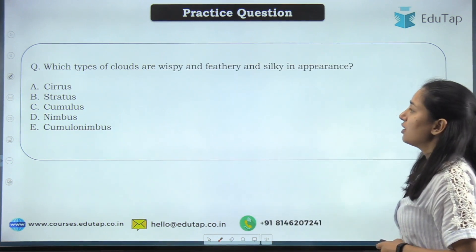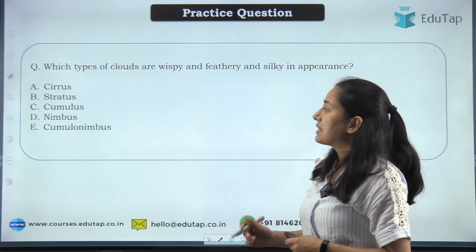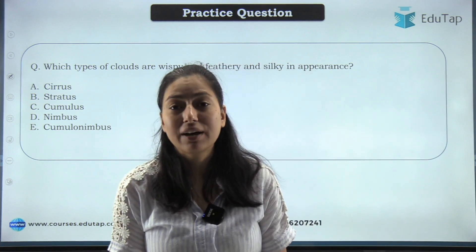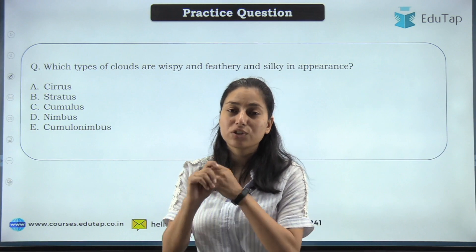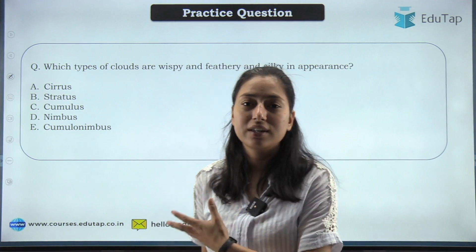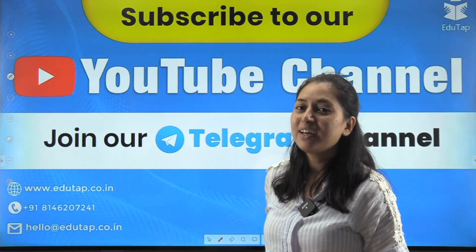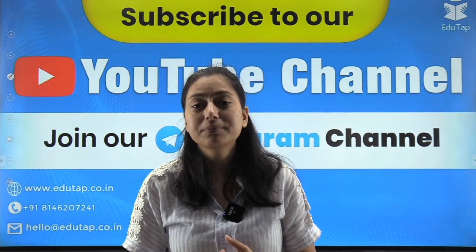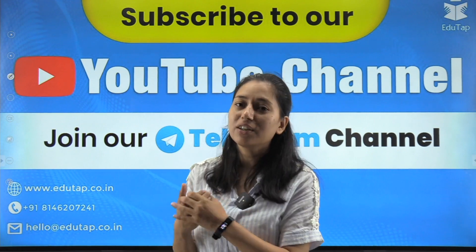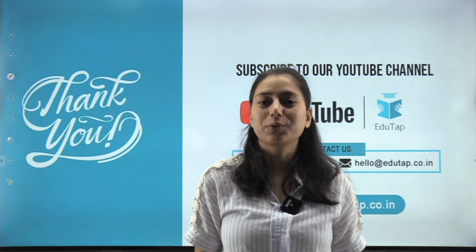Next question for you to attempt: which type of cloud is wispy, feathery, and silky in appearance? Options: cirrus, stratus, cumulus, nimbus, cumulonimbus. Attempt this question yourself and let me know the answer in the comment box. I hope the information has been conveyed properly. If you like this video, please join our YouTube channel, and to download lecture videos, join our Telegram channel. That was all for this video — thank you so much.